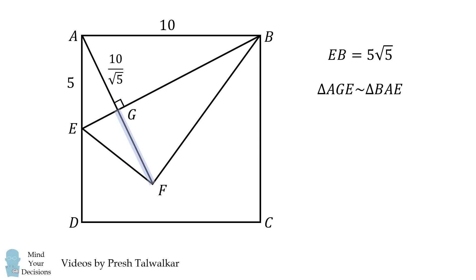Now, what's the length of GF? Well, AG and GF are equal to each other because EB is the perpendicular bisector of AF. Therefore, GF is equal to 10 divided by the square root of 5.